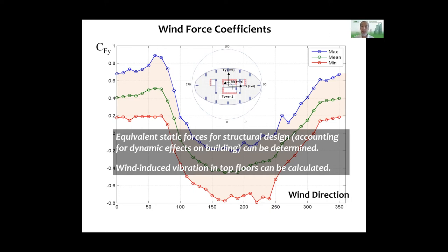From this type of test, we can also calculate the lateral sway motion of the structure and estimate the level of floor acceleration at the top. If it's too high, it will create problems for building occupants, and we can suppress it through structural measures or by adding dampers.